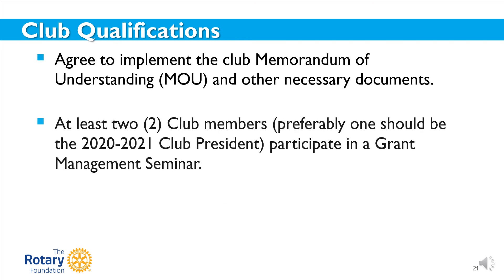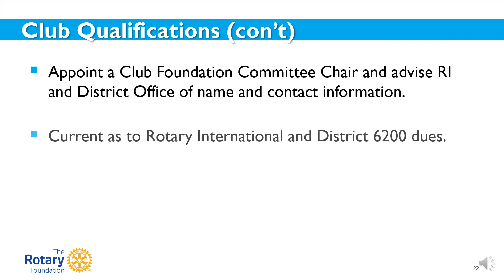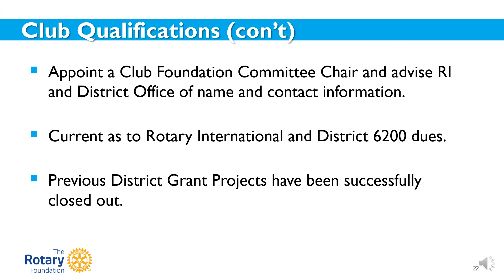Clubs that want to apply for a district or global grant must also be qualified. Districts are responsible for qualifying their clubs each year. To become qualified for this grant cycle, your club must agree to implement the club memorandum of understanding, have at least two club members — preferably one should be the 2020-21 club president — participate in a grant management seminar, and enter the club's Rotary Foundation Giving Goals into Rotary Club Central. Appoint a club foundation committee chair and advise RI and the district office of the name and contact information. Be current as to Rotary International and District 6200 dues. And all previous district grant projects undertaken by the club have been successfully closed out.